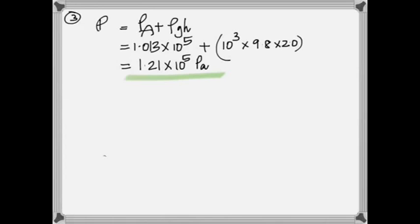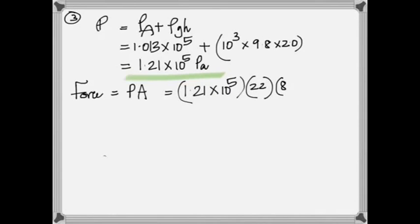What else do you need? The total force. How do you find the force from the pressure? Force is pressure multiplied by area. So force is pressure multiplied by area, and the area is 22 times 8.5. That's all multiplied and you get that.